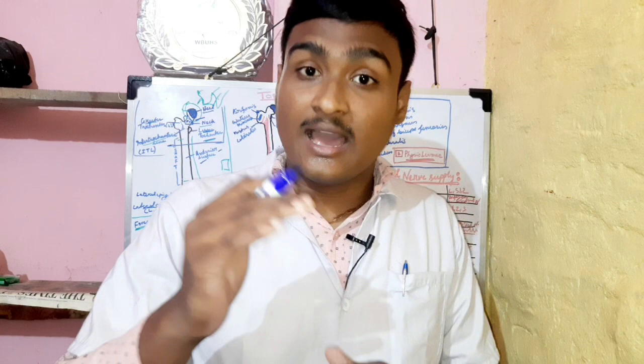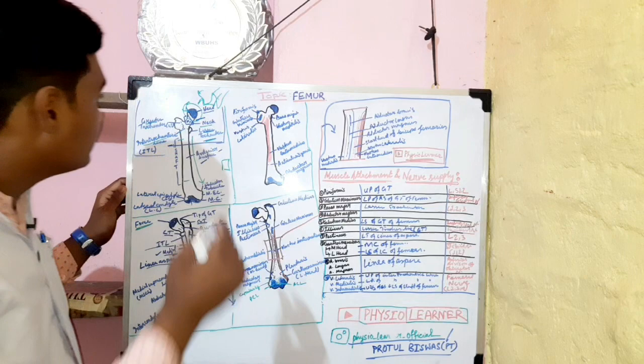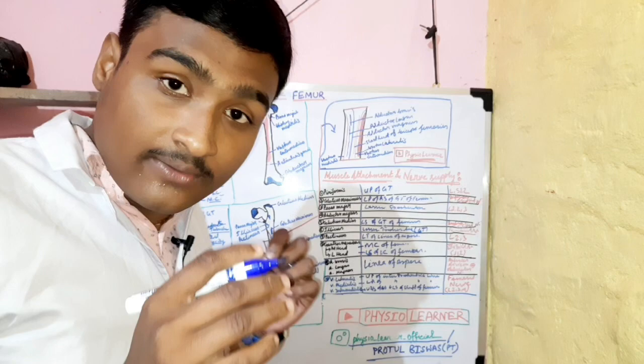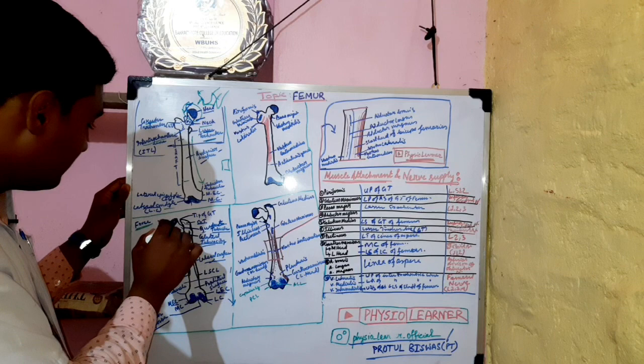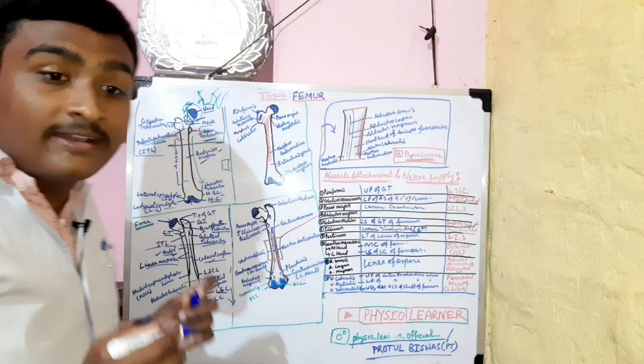The head is slightly medially placed, slightly upwards and slightly forward. It articulates with the acetabulum of the hip joint. There is a ligament attached at the fovea — the ligament of the head of the femur. The neck is approximately 3.3 to 3.7 centimeters long.